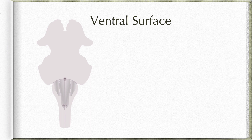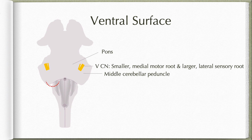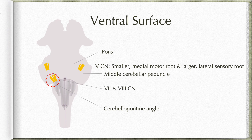From the ventral surface, the fifth cranial nerve or the trigeminal nerve exits roughly at the mid level of the pons. It has a small medial motor root and a larger lateral sensory root. The site of attachment of the trigeminal nerve demarcates the pons medially from the middle cerebellar peduncles laterally. The lower lateral area demarcated by the red dotted line is known as the cerebellopontine angle. Here the facial nerve exits with its nervus intermedius component, and the vestibulocochlear nerve at the pontomedullary junction. Upper rootlets of the glossopharyngeal nerve exit along the dorsolateral sulcus, and there is granular choroid plexus of the fourth ventricle protruding through the foramen of Luschka into the subarachnoid space.